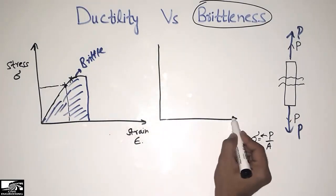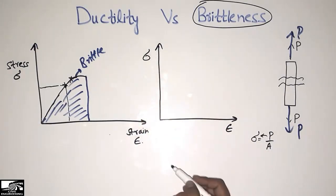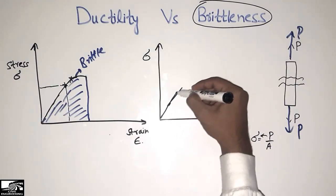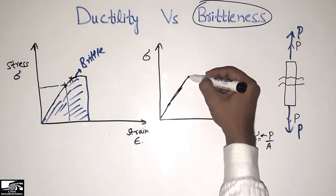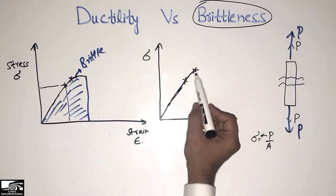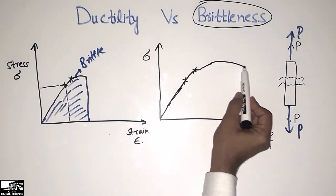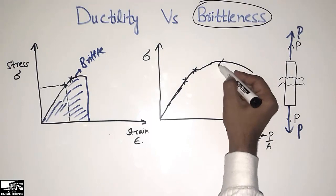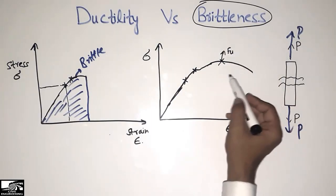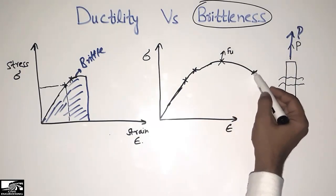For the ductile material, strain epsilon is on the x-axis and stress sigma is on the y-axis. When the load is applied, stress and strain increase in the material. It reaches the elastic limit, then the yield limit. After the yield limit, the material goes into plastic deformation more and more, reaching the ultimate strength — represented by fu — and then it fractures at that point.